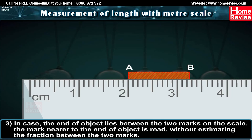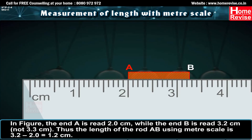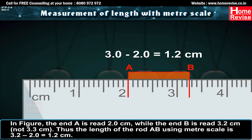Third, if the end of the object lies between two marks on the scale, the mark nearer to the end of the object is read without estimating the fraction. For example, end A is read as 2 cm while end B is read as 3.2 cm, not 3.3 cm. Thus, the length of rod AB is 3.2 minus 2, which equals 1.2 cm.